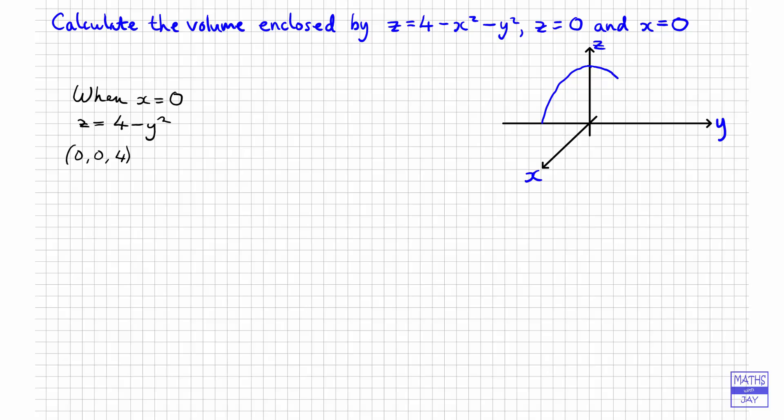So we've got this kind of thing happening here. That should be symmetrical. And what else can we see? What happens when z is 0? If z is 0, then we've got 4 minus x squared minus y squared is 0, so x squared plus y squared is 4. So on the xy plane, we've got a circle.